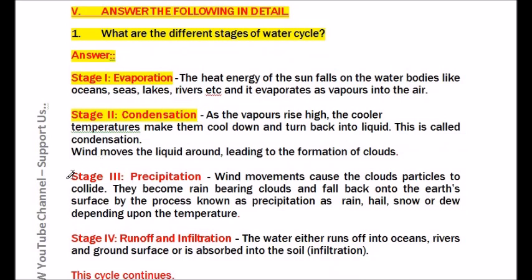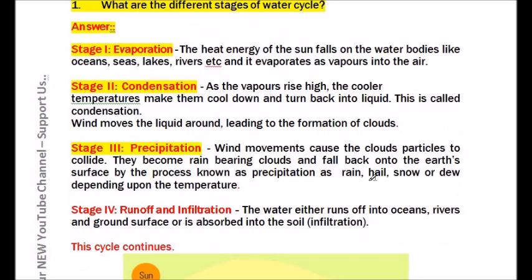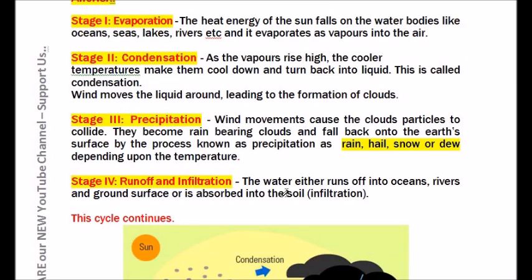Stage three — Precipitation: Wind movements cause cloud particles to collide; they become rain-bearing clouds and fall back onto the earth's surface as precipitation in the form of rain, hail, snow, or dew, depending on temperature. Stage four — Runoff and Infiltration: The water either runs off to oceans, rivers, and ground surface, or is absorbed into the soil. This cycle then continues.